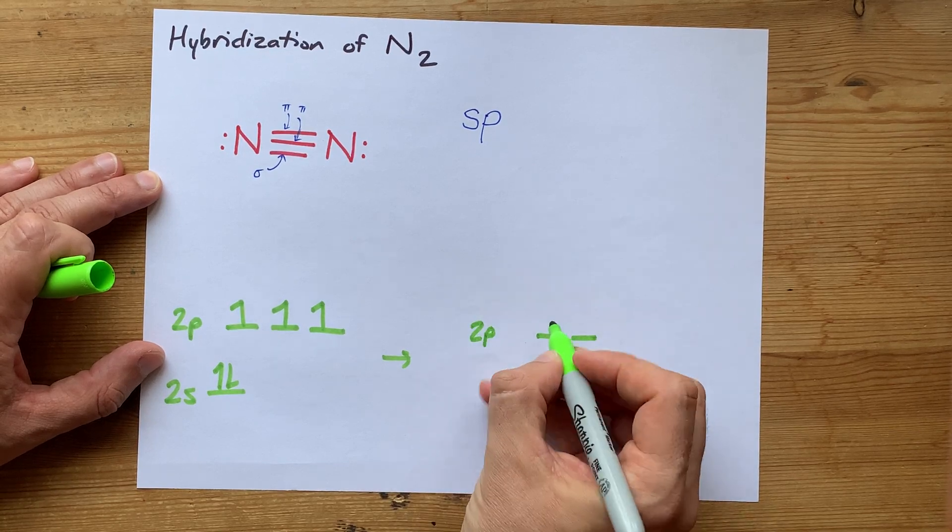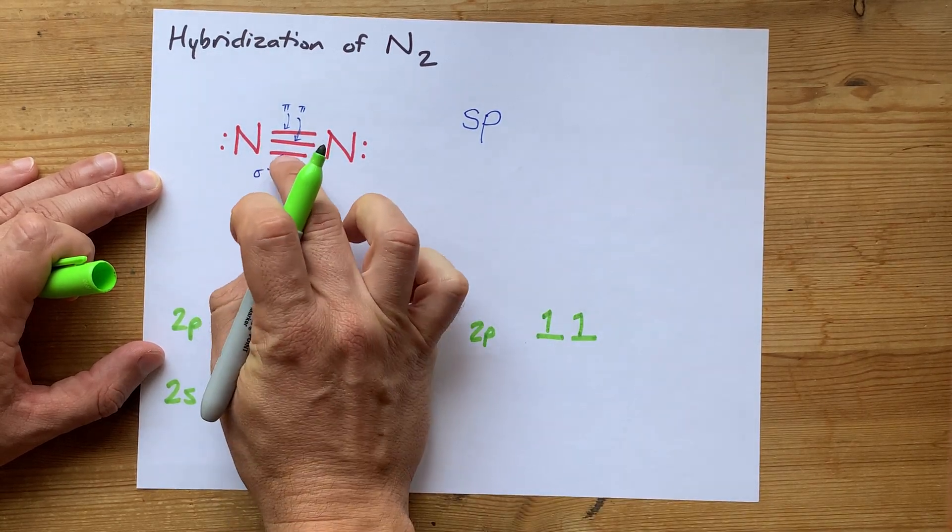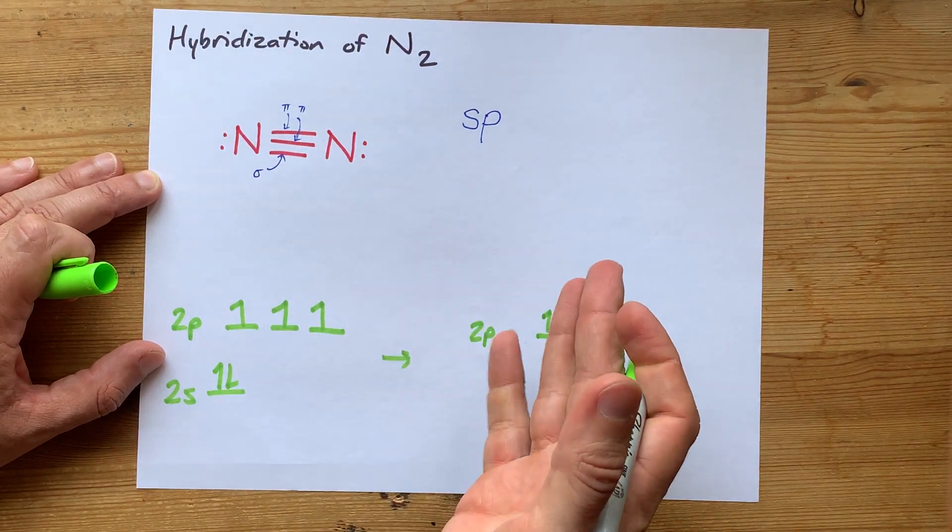because those are what's going to overlap to form the second and third bonds, the pi bonds.